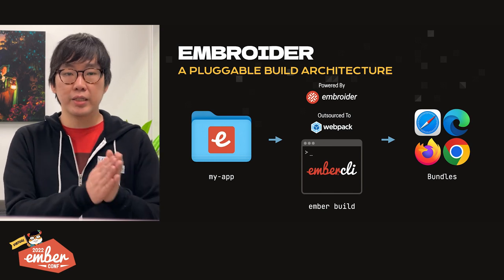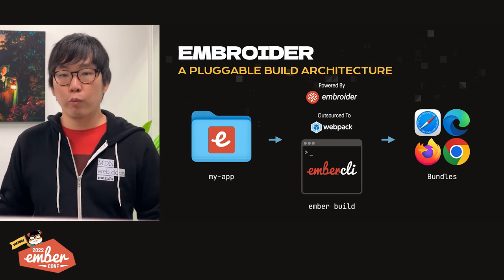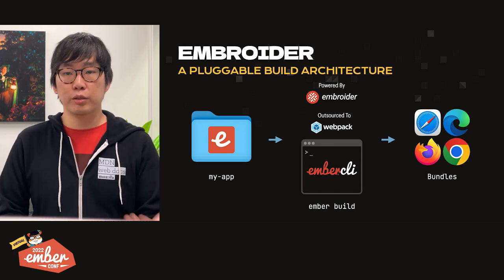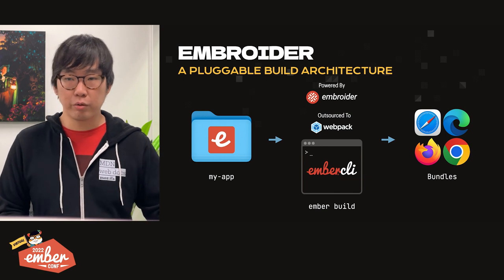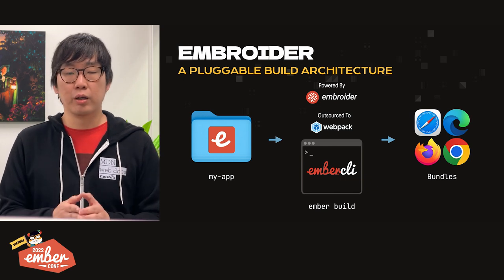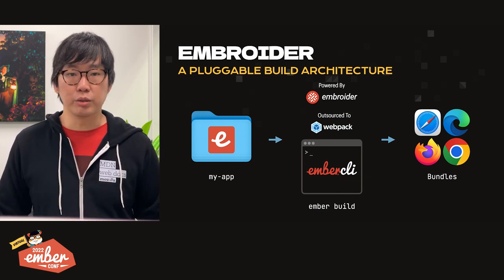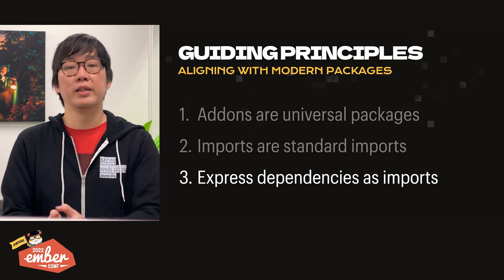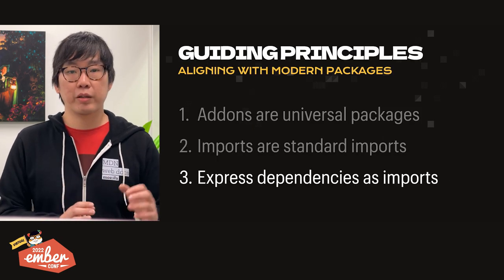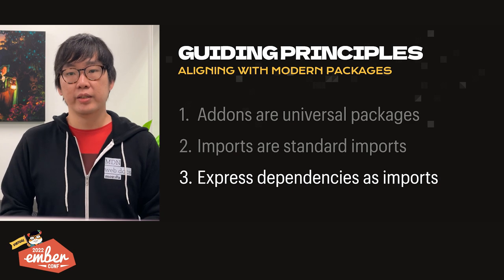But if you find yourself wanting to experiment with new JavaScript features, you could install a custom Babel plugin like everyone else. Same with Webpack — it comes with Ember by default, we set it up for you. But if you're using something like PostCSS and the documentation asks you to add something to your Webpack config, now you have a place to put it. Embroider is a pluggable architecture, so Webpack just happens to be the default. If you want to use something else like Rollup or Vite, you could do that too.